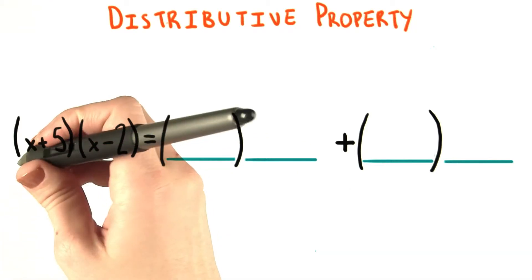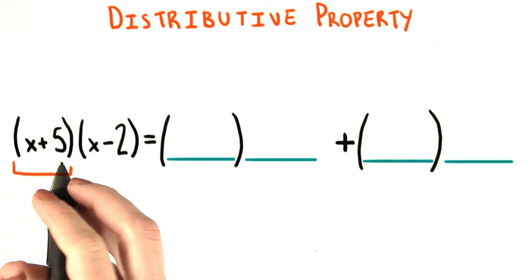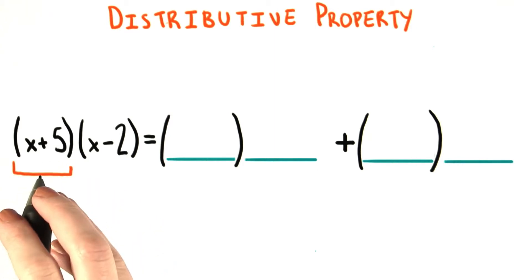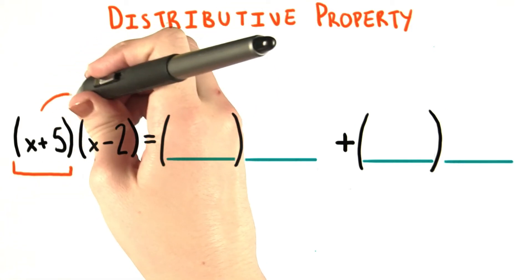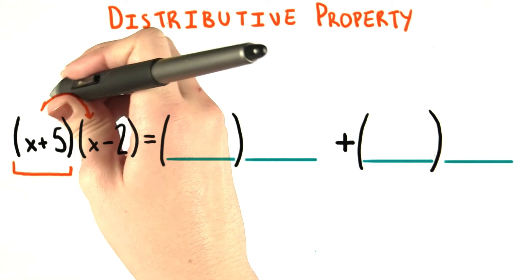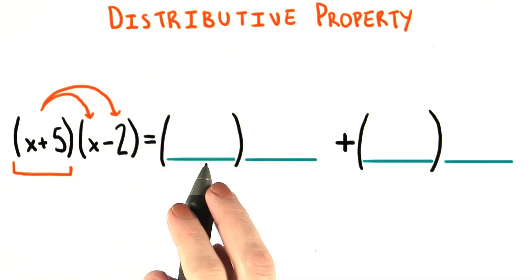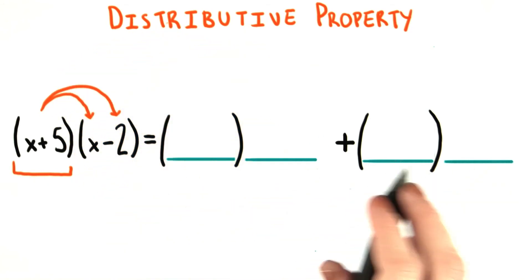So for now, please just treat this first factor, the x plus 5, as a block, so as a single unit, and then distribute it to each of the two terms inside the second set of parentheses. And then write out what you would have in the slots over here on the right.